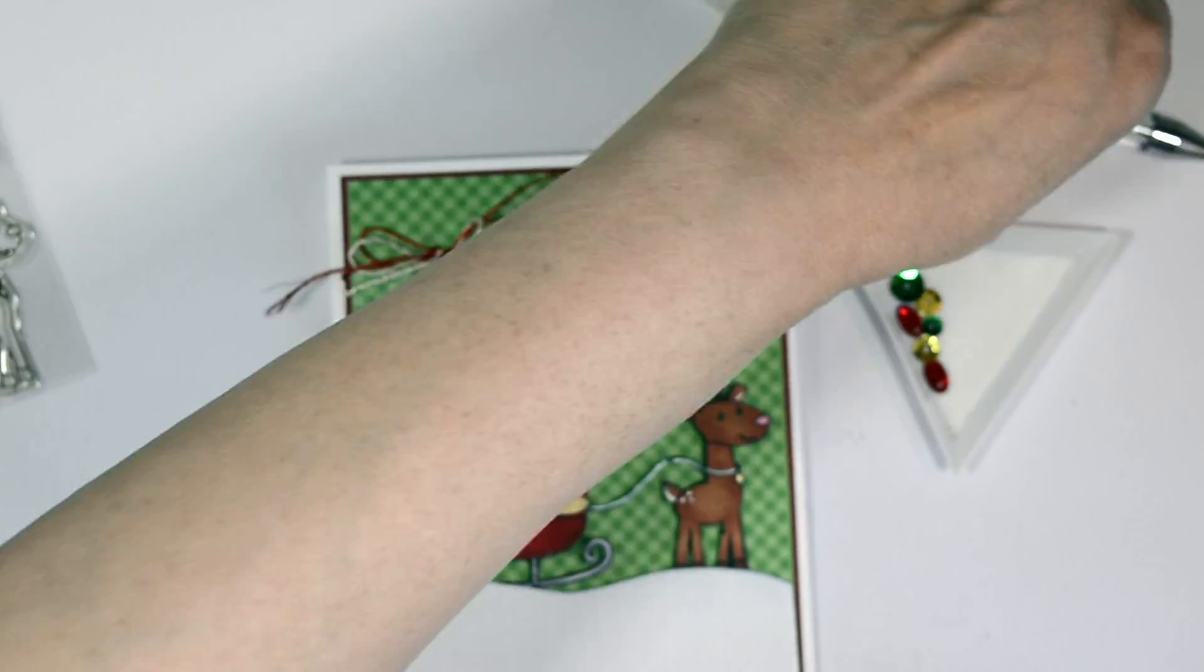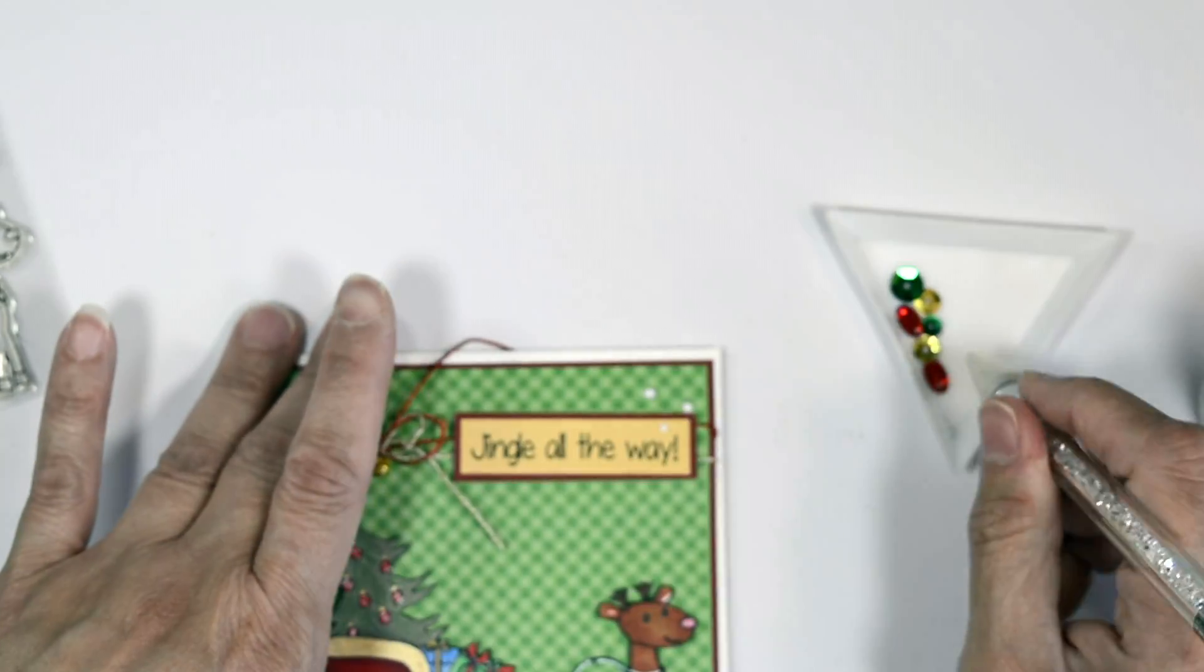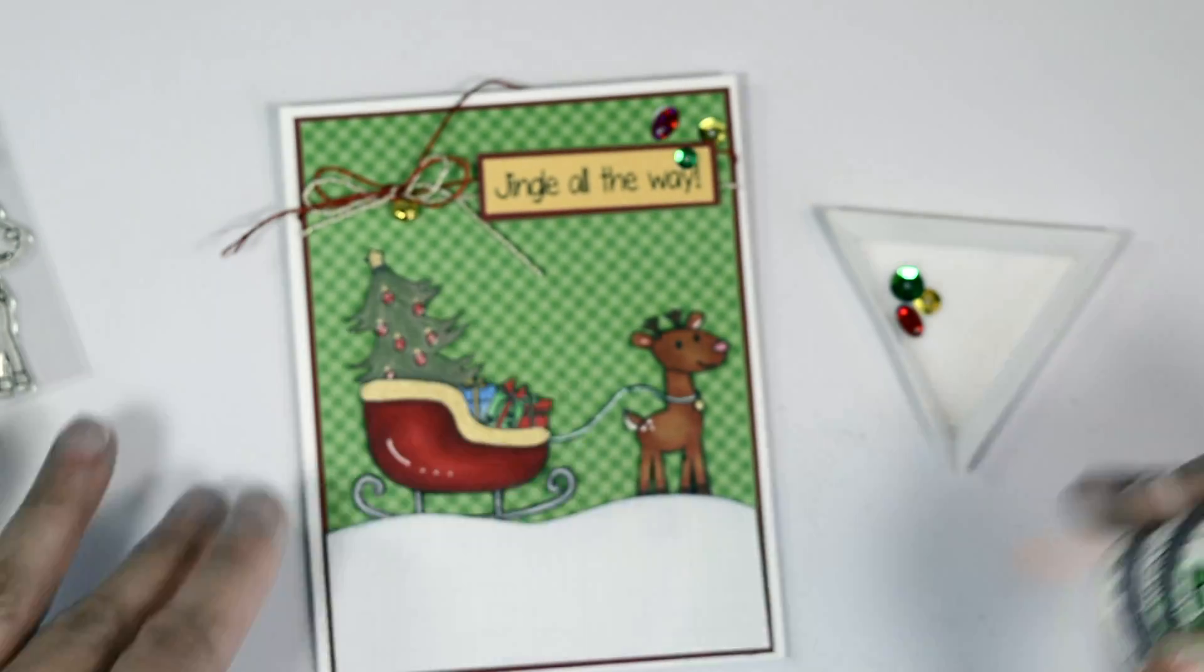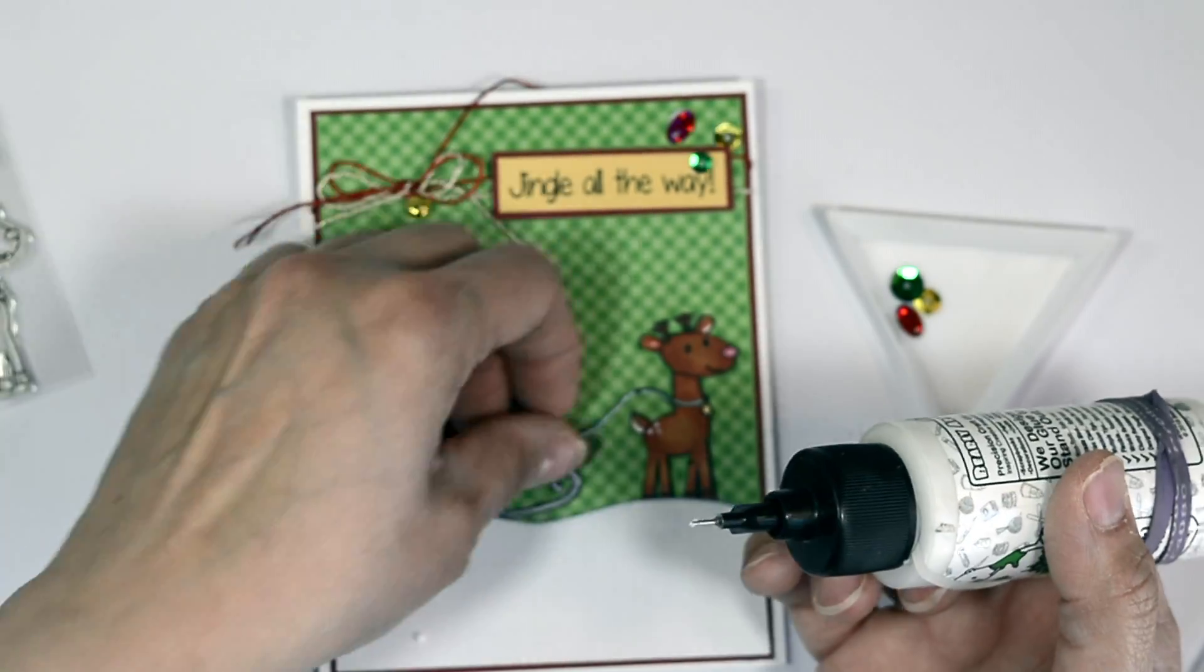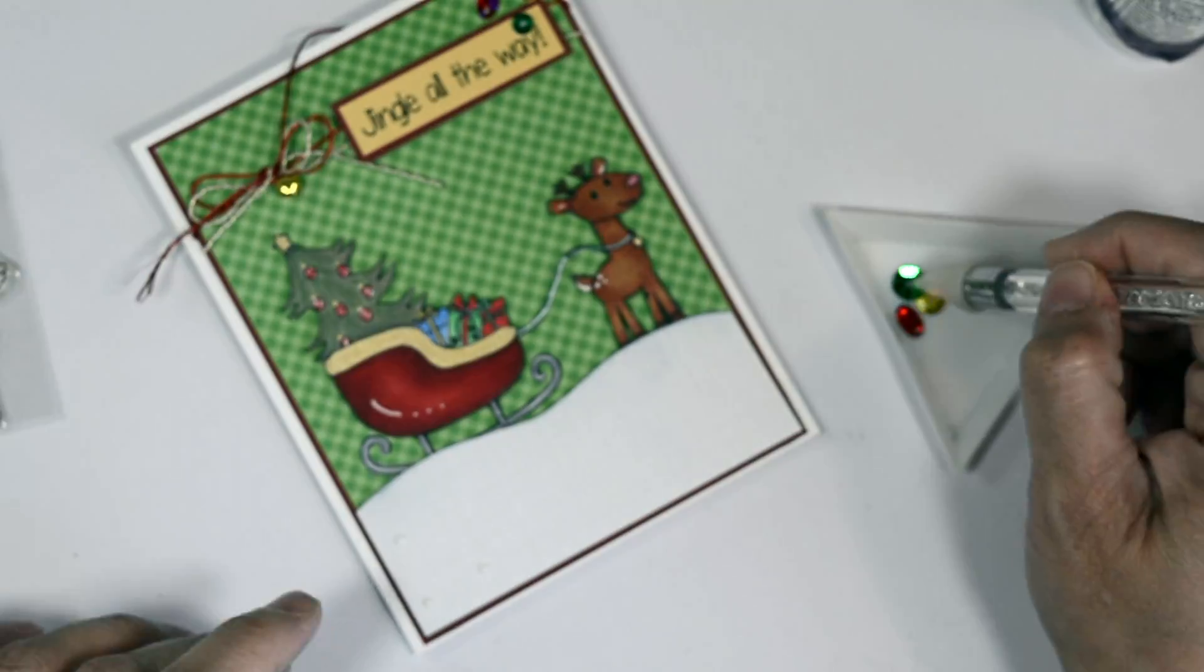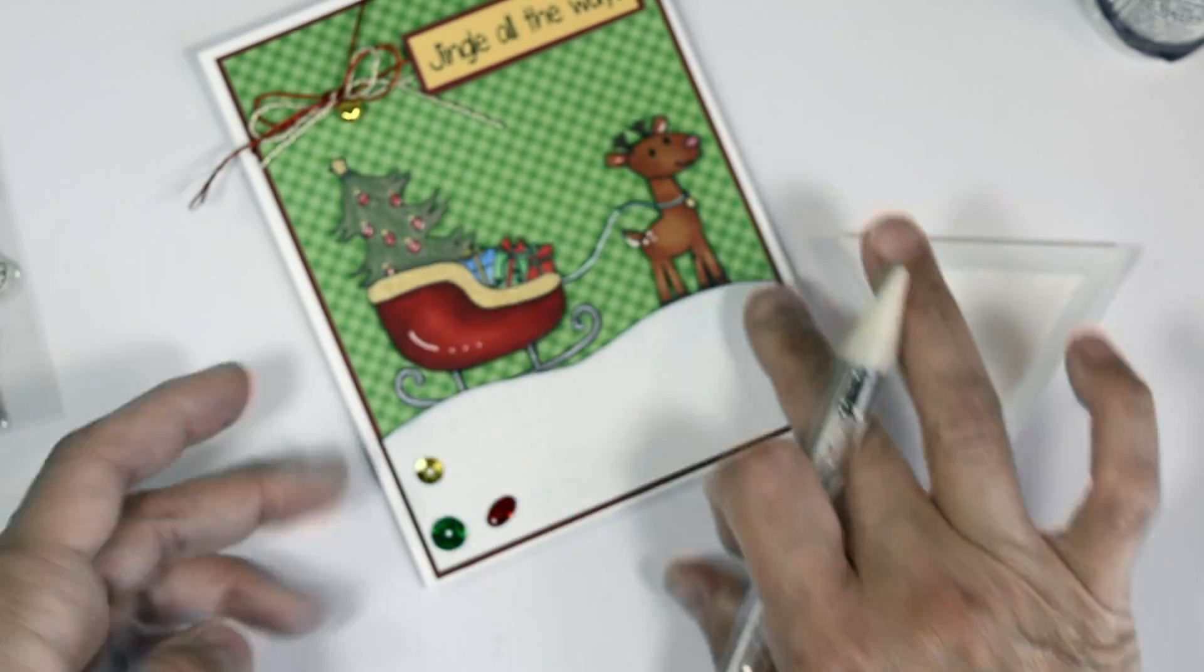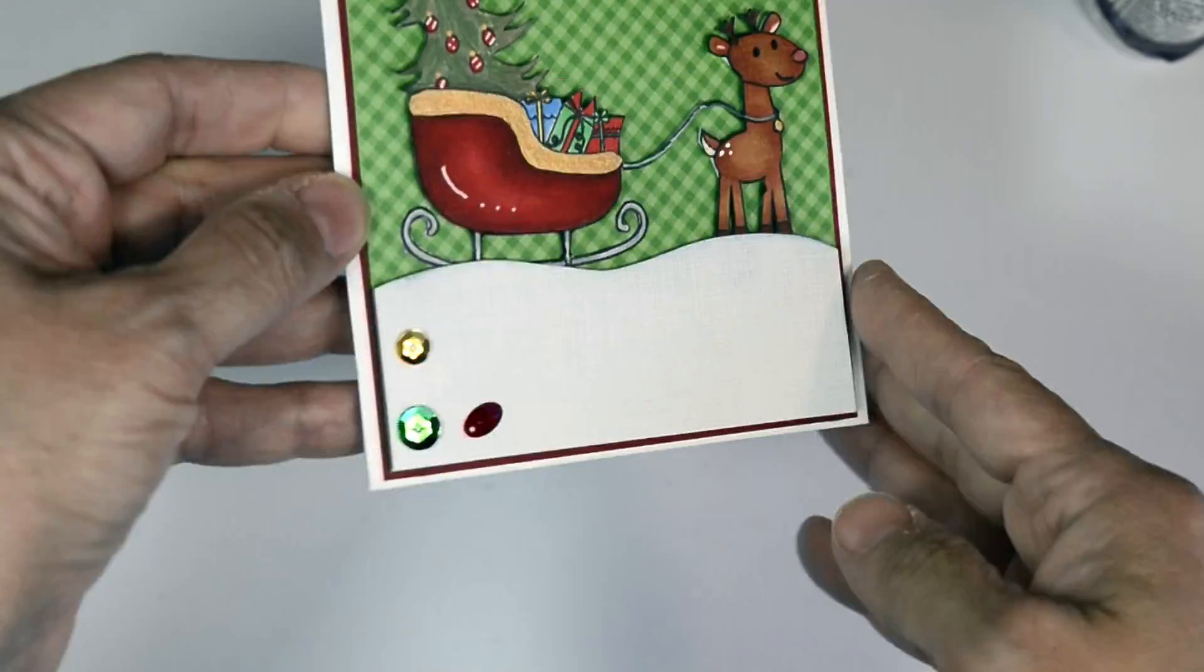So I'm going to embellish it with some sequins here. I pulled out some red and some gold and greens from our Paper Sweeties sequins mixes, but the red, these little red oval ones I pulled from my stash. I thought it would be so cute because it kind of looks like Rudolph's nose to me, but of course you can use what you have. And of course Paper Sweeties carries a nice variety of sequins and other embellishments for your card. Alright. I'm going to go ahead and add our sequins to the bottom left and our top right. And now our card is complete.